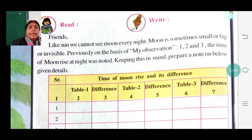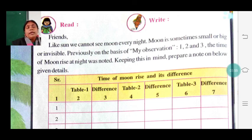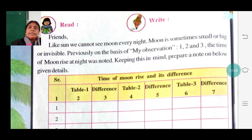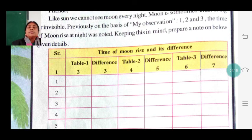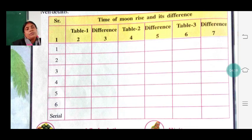Like the sun, we cannot see the moon every night. The moon is sometimes small or sometimes invisible. The size of the moon always changes — within 15 days sometimes it is very small, sometimes it is a full moon, and sometimes it is invisible. You have to write the time of moonrise and note the difference in shape.